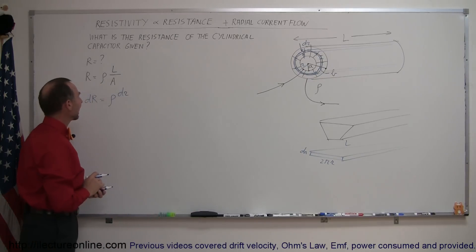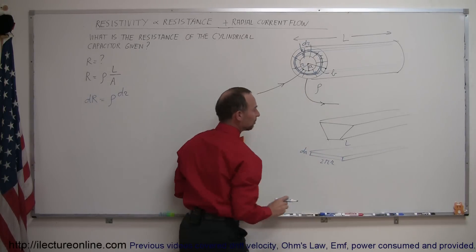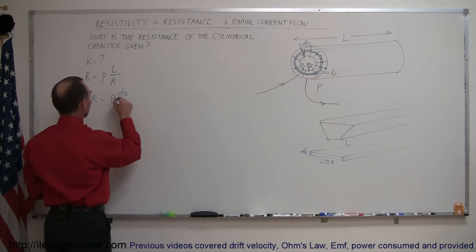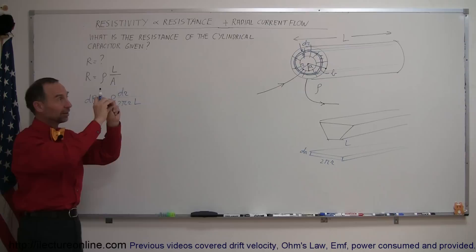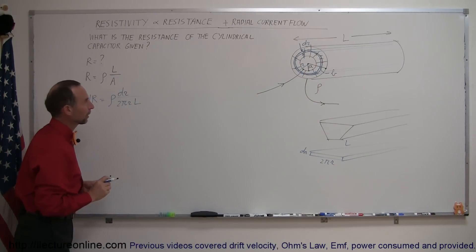So the cross-sectional area of that would be the width times the length. That would be 2 pi r times L. That would be the cross-sectional area of that little segment of that resistor where the current has to flow through.